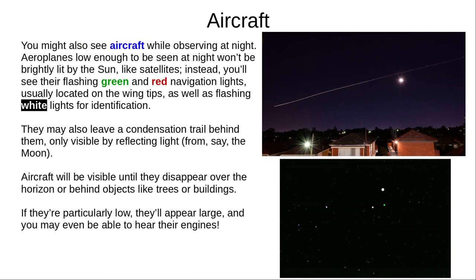And finally, we come to aircraft. At night, aircraft are too low to reflect the sun's light, but they have their own navigation and identification lights, which flash red, green, and white. Depending on the weather, they may leave a condensation trail of water behind them, which might be lit by the moon. Aircraft are visible until they disappear behind trees, buildings, or clouds. And if they're low enough, you might even hear their engines.